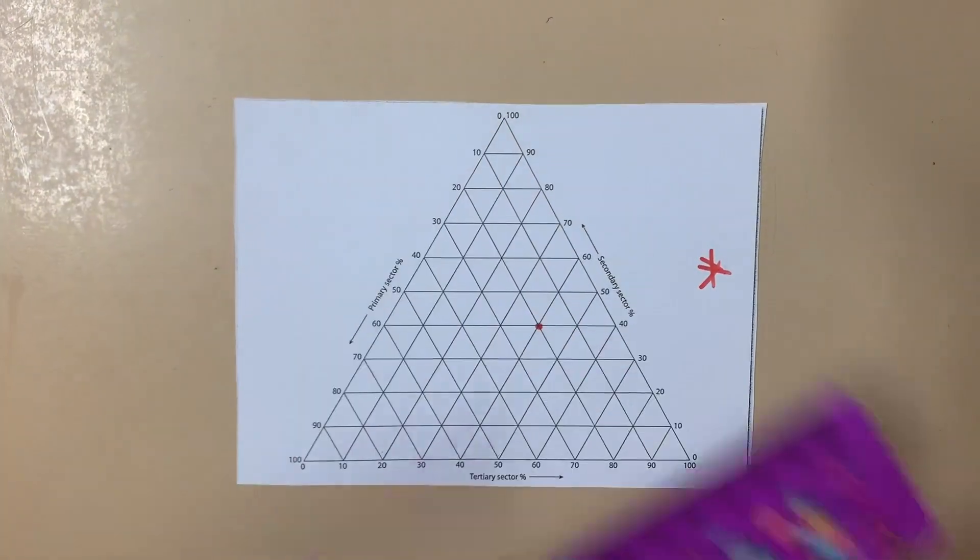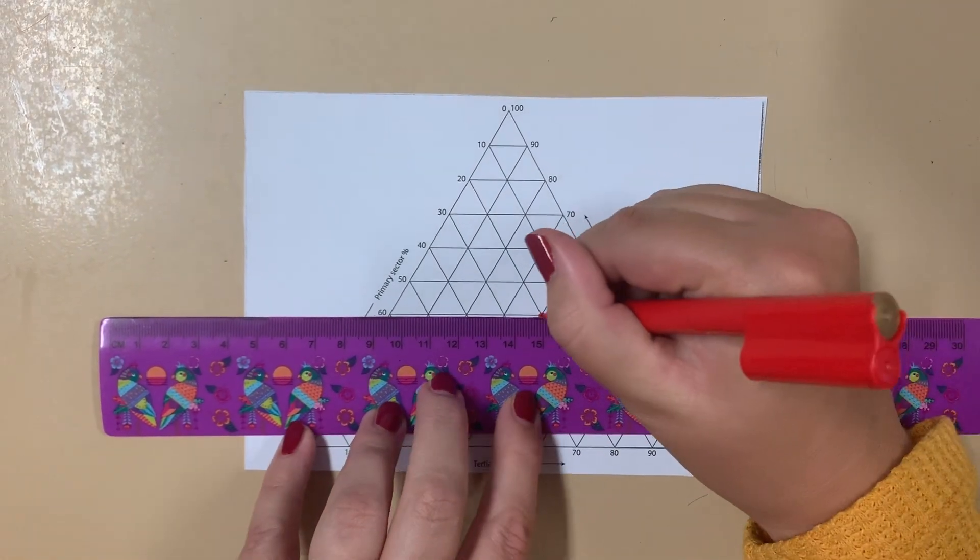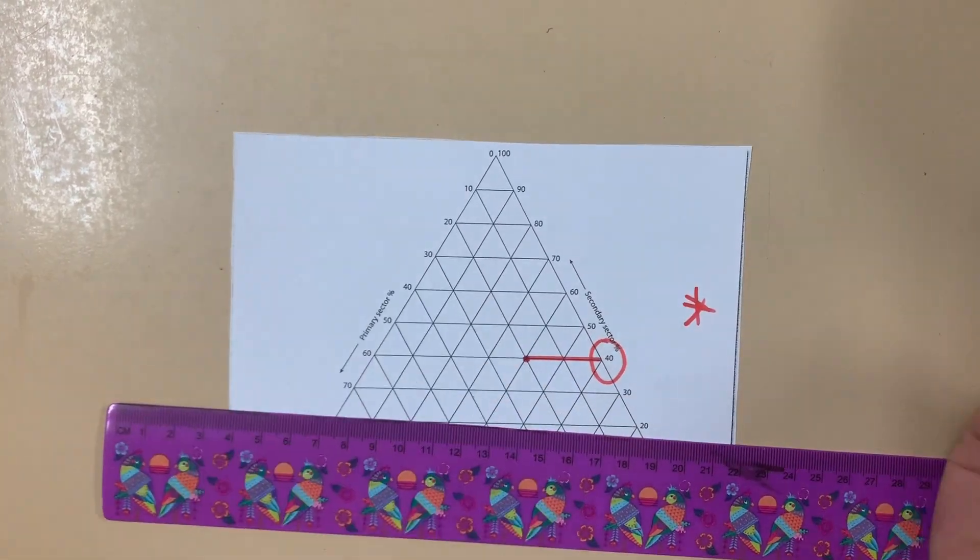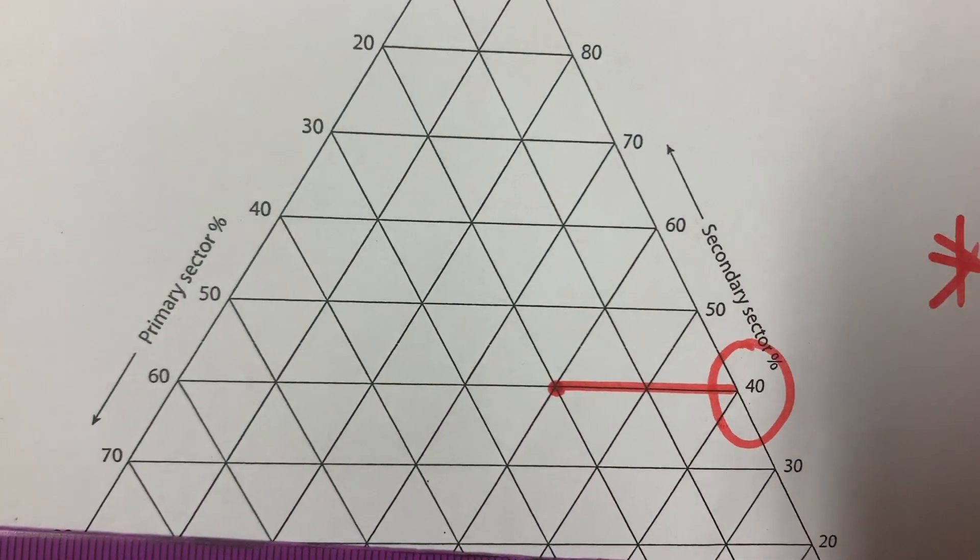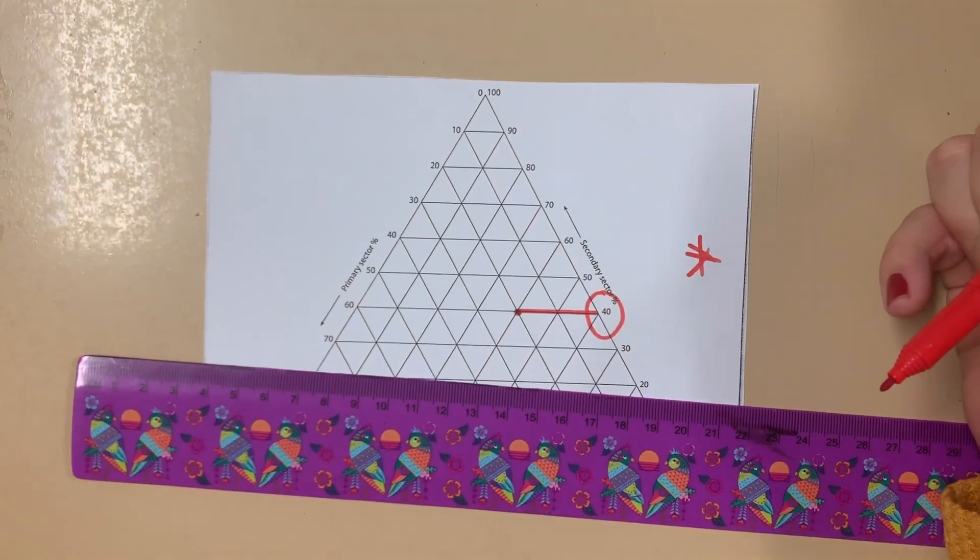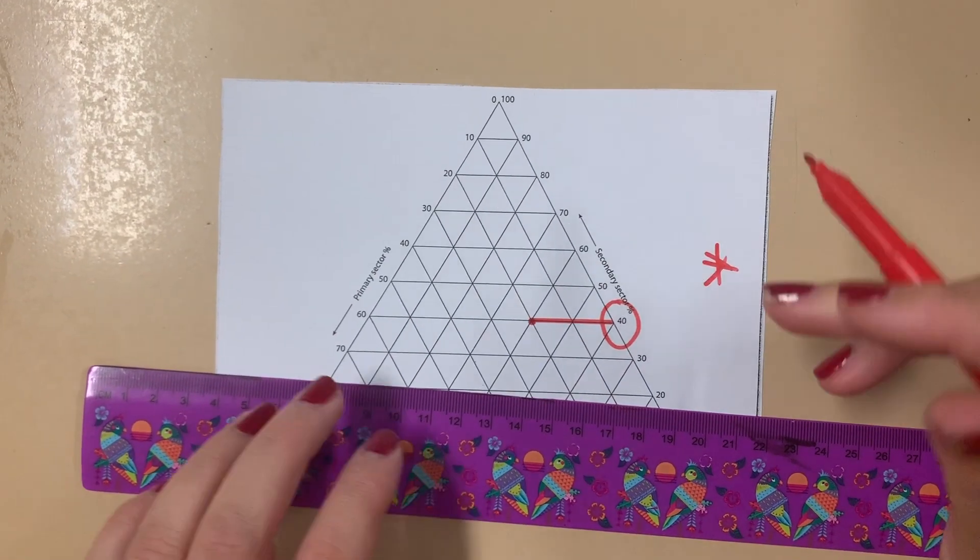Always start on this side because it's the easiest side and we just draw a line straight across. So you can see here 40% of this particular country are in the secondary sector. This means they work in things turning raw goods into materials, so things like manufacturing, working in factories and so on.